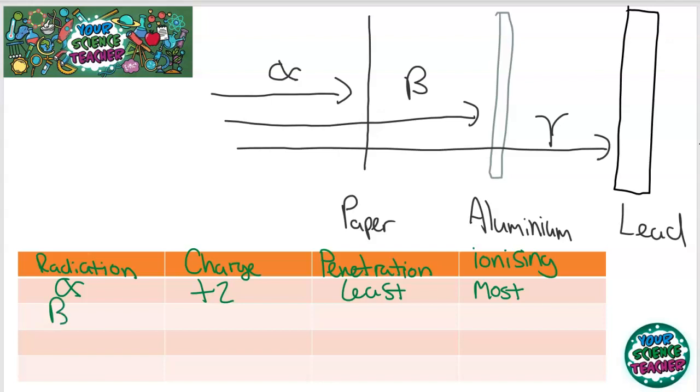The next one we're going to look at is beta radiation. That one has a charge of minus one. Remember, I said it's a very high energy electron. And it is the medium amount of penetration. It will travel through the paper, but gets stopped by aluminium. A thin sheet of aluminium should stop it. And it's the medium for ionizing as well. It's quite dangerous, and it will travel through quite a lot of things. So beta radiation is one to look out for.